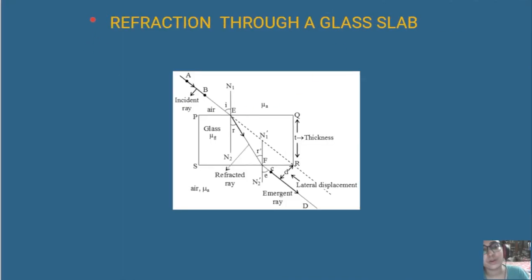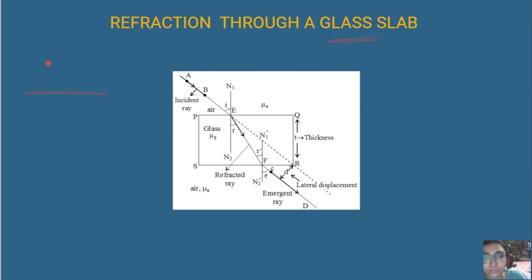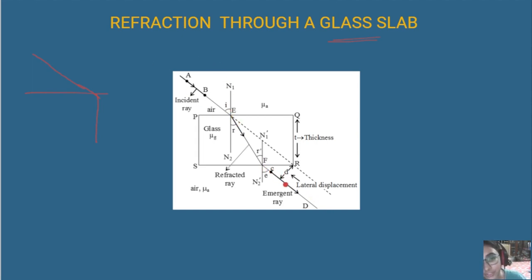Now we are going to study refraction through a glass slab. When we talked about refraction through water, light was refracting just once. But here, light refracts twice, and ultimately the emergent ray is parallel to the incident ray extended.